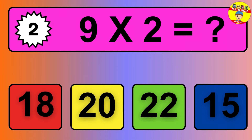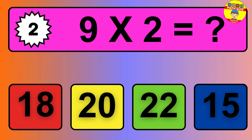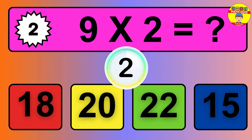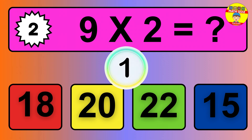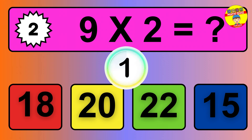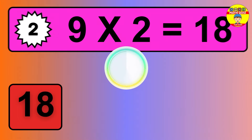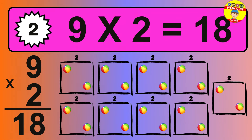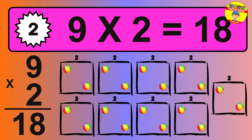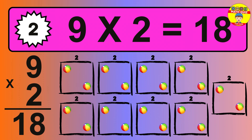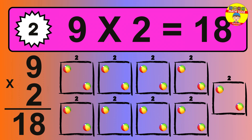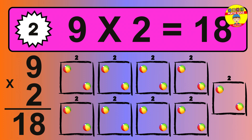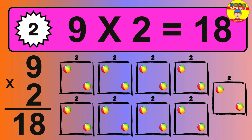Question 2. 9 times 2 equals what? The answer is 9 times 2 is 18. To calculate, we have 9 groups with 2 balls each one. So how many balls do we have? 18 balls.